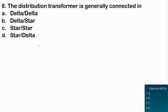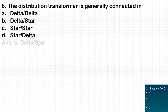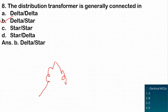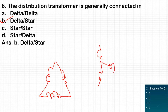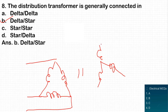The next question: a distribution transformer is generally connected in which form — delta-delta, delta-star, star-star, or star-delta? It is always connected in delta-star. As shown here, the primary is in delta and the secondary is in star. Due to the star connection on the secondary, the neutral point is easily available, allowing single-phase loads to be easily connected.